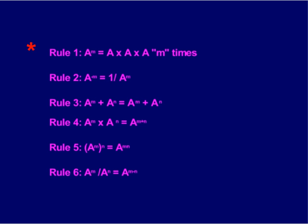Now rule number one, a to the m equals a times itself, m number of times. This one's pretty simple, it's just a times itself, the appropriate number of times.